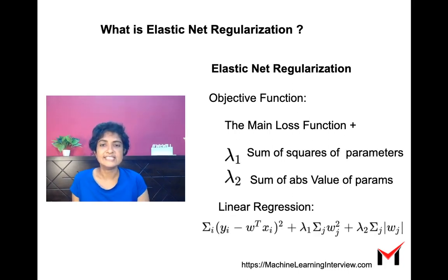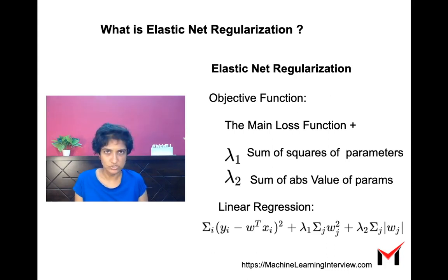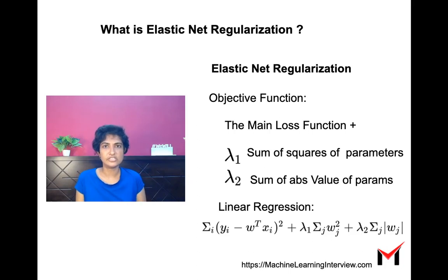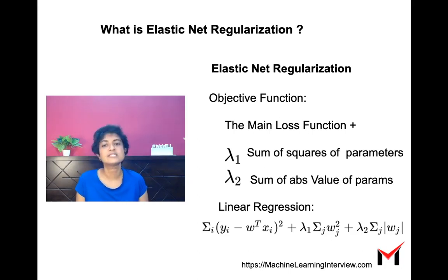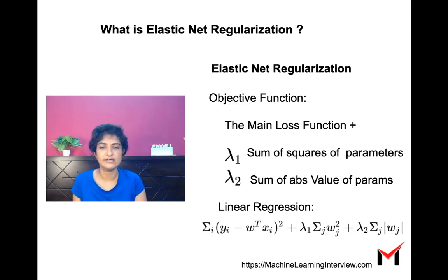The elastic net is a combination of both ridge and lasso regularization. We have the main loss function plus lambda1 times the sum of squares of parameters, plus lambda2 times the sum of absolute values of parameters, and you can see the same thing in the loss function for linear regression below.